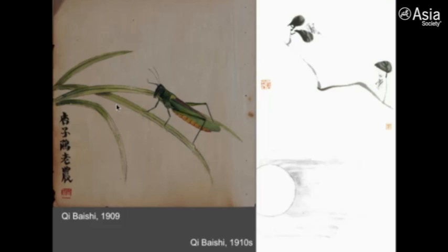The insects, which at that time was quite progressive and revolutionary, because insects signal change, and change was what the political activists at the time advocated.